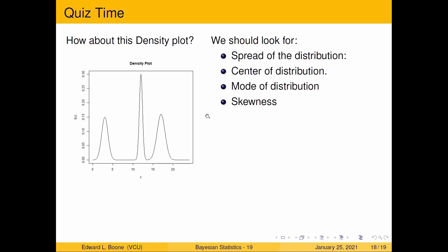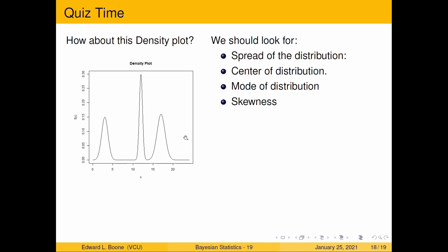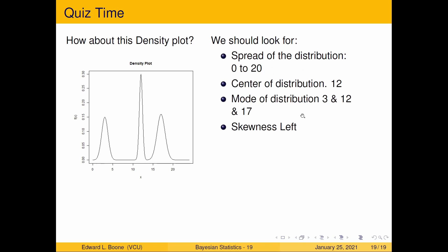How about this one? This is a continuous distribution. When it looks like this, it's really clear that it's continuous. If I look at the spread, I'd say this goes between 0 and 20. The center of the distribution I'm guessing is around 12. The mode of the distribution — this thing actually has three modes: 1, 2, and 3. And the skewness: this is actually going to be skewed left because there's a bulk pulled away from the mass over here. So: range 0 to 20, center around 12, modes at 3, 12, and 17, and the skewness is left.